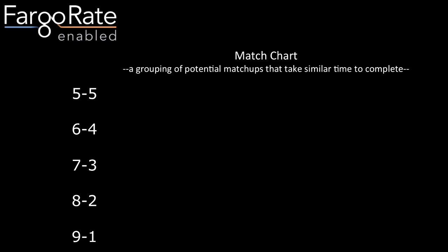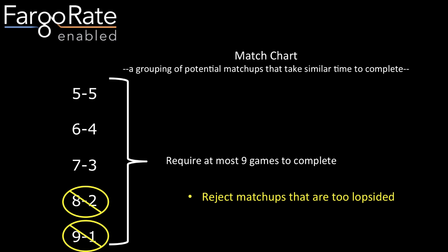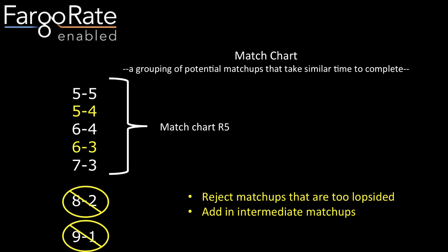It's a good idea when running a tournament to have different matches at the same potential maximum time — all of these take at most nine games to complete. First, we reject matchups that are too lopsided, defined as any matchup where the higher-rated player needs to win more than three times the number of games as the lower-rated player. That eliminates eight-to-two and nine-to-one. We also add intermediate matchups: five-to-four and six-to-three. The original three add to ten (five-five, six-four, seven-three) and the two added ones add to nine. We call these five matchups match chart R5, based upon a base race to five.